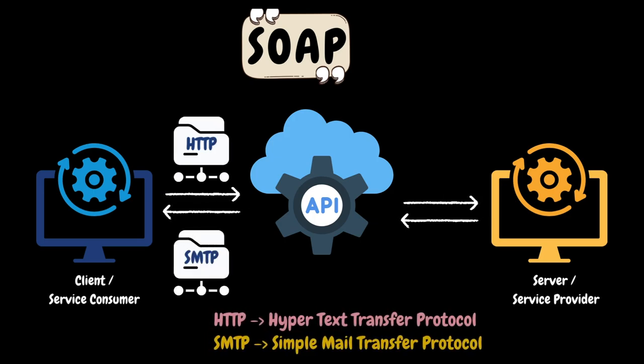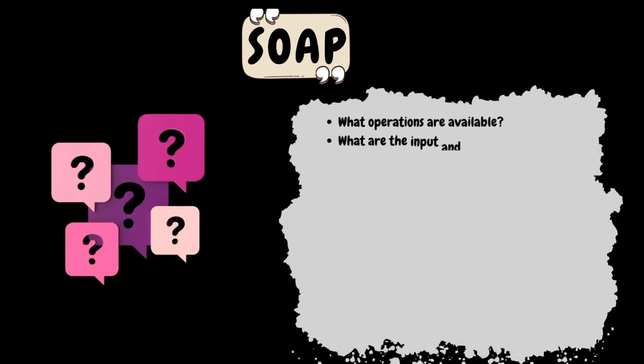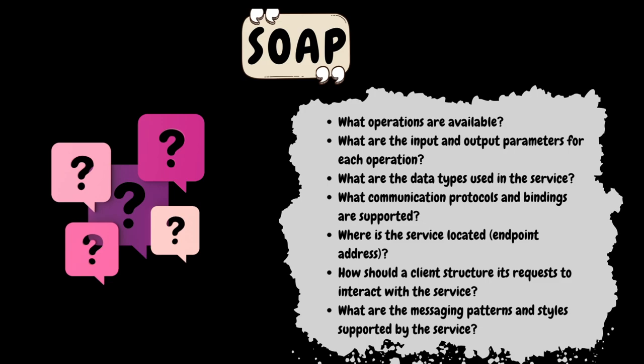SOAP relies on standardized protocols such as HTTP (Hypertext Transfer Protocol) and SMTP (Simple Mail Transfer Protocol) for message transmission. There are two other important components to be aware of with SOAP: WSDL and UDDI. How does a client or service consumer know what operations the service provider is offering, what the input and output parameters are, what data types are used, what communication protocols are supported, and how to structure its request? WSDL answers all these questions.